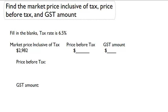Find the market price inclusive of tax, price before tax, and GST amount. For these examples, we'll have a relationship between the market price inclusive of tax, the price before tax, and the GST amount.